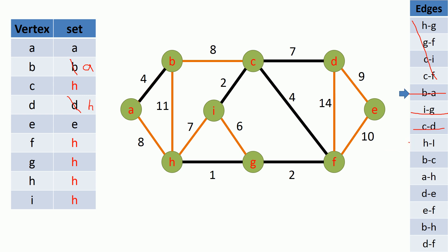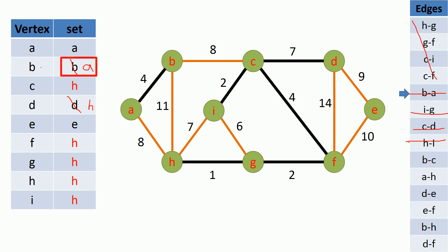The next remaining minimum weighted edge is the edge between H and I vertices. H vertex currently belongs to set H and I vertex also currently belongs to set H, therefore this edge will not be added to the MST and we ignore it. The next remaining minimum weighted edge is the edge between B and C vertices. B vertex currently belongs to set A and C vertex currently belongs to set H, so they are in different sets. Therefore we can add this edge to our MST. Now to union these sets we have to change both A vertex set to H and B vertex set to H.